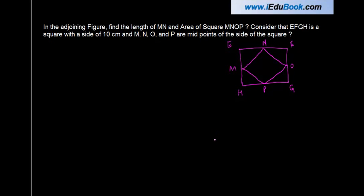In the adjoining figure, find the length of MN. MN is here. Let me just color this out. Find the length of MN and the area of the square MNOP.